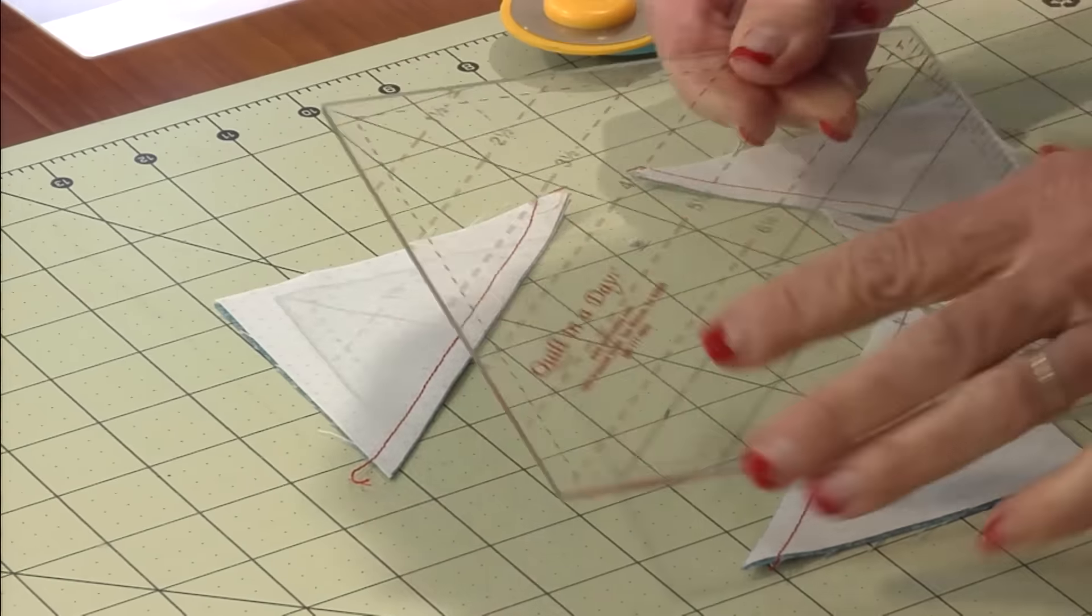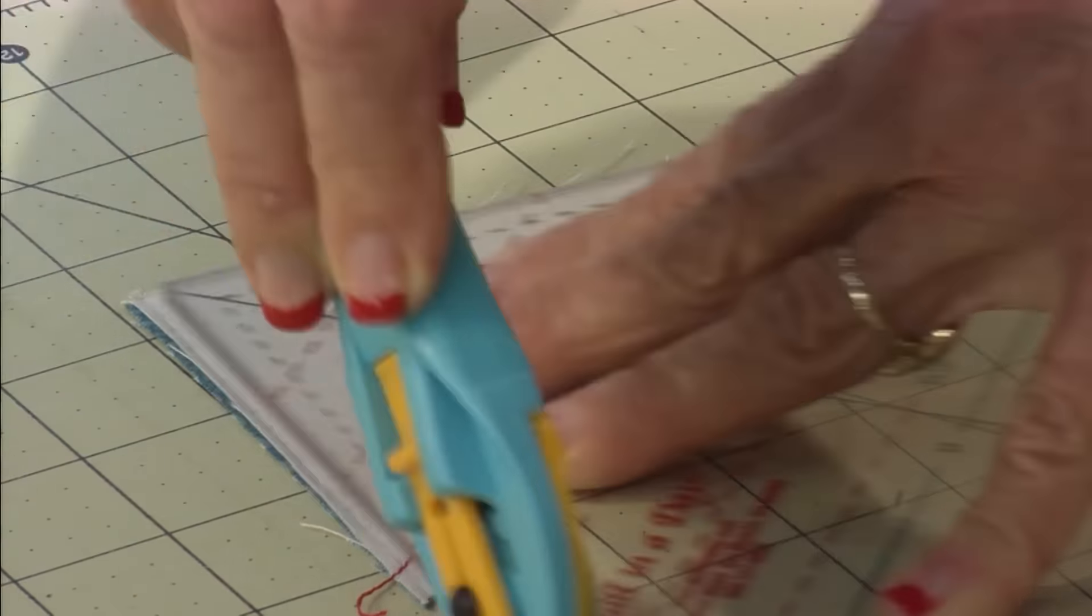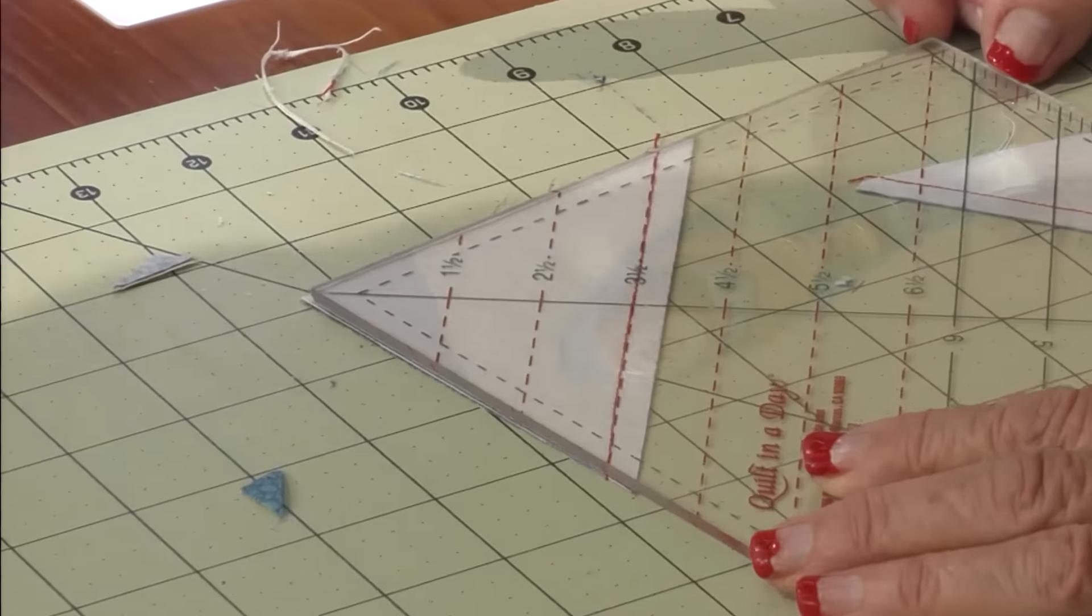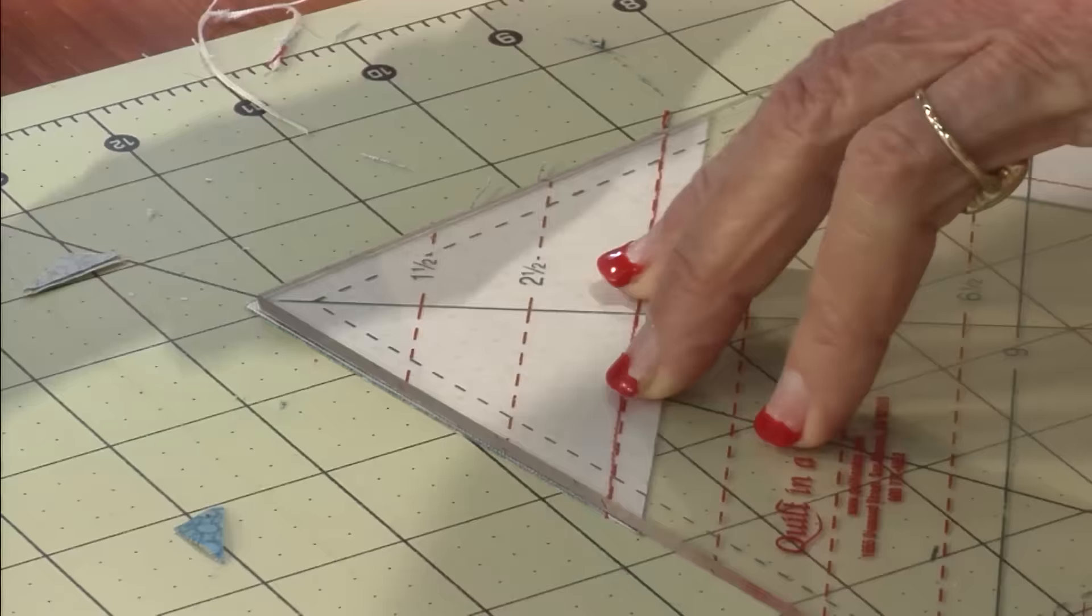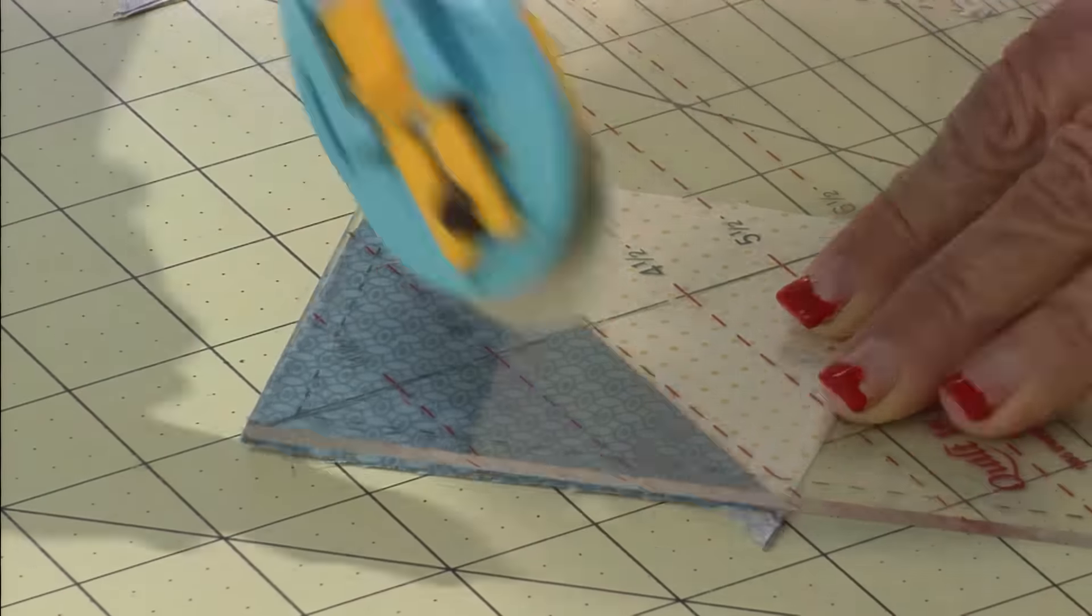Square them to three and a half inches. This is the six and a half inch triangle square up ruler. Put three and a half on the line. Trim the extra. Press them to the dark and then trim off those points.